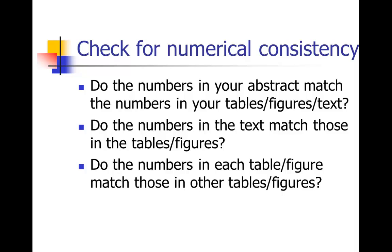I've also seen many cases where numbers in the text don't match exactly the numbers in the tables and figures. For example, I was doing a statistical review just this week and got very confused because I read numbers in the text, went to table two, and the authors had basically subtracted column one from column two to get those numbers. But when I subtracted those two numbers, I didn't get anything close to what they had in the text. They also calculated percentages from table two and came up with totally different percentages than I did, which raises a big red flag.